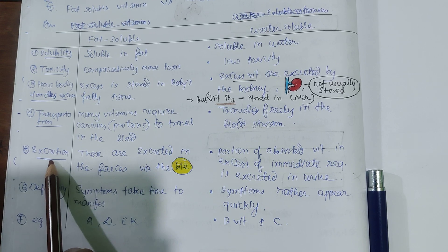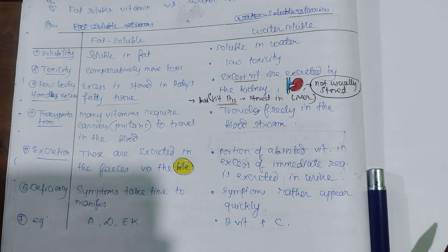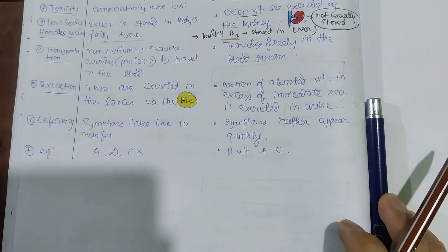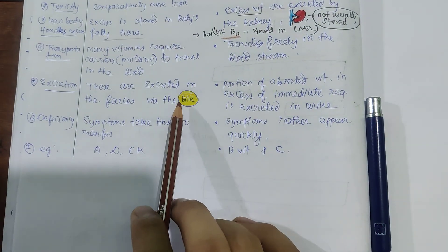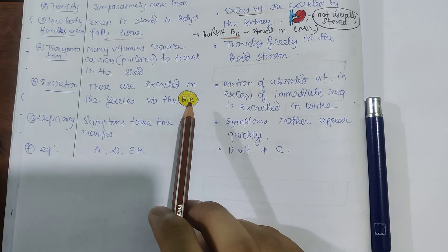Next is excretion. Fat-soluble vitamins are excreted in the feces via the bile. See this yellow color - try to remember: excreted in the feces via the bile.